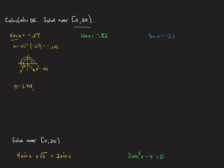To get the quadrant 4 angle, we go all the way to 2 pi and subtract 0.606, or equivalently add negative 0.606. So 2 pi plus negative 0.606 gives approximately 5.677. Those are our two angles between 0 and 2 pi where sine equals negative 0.57.